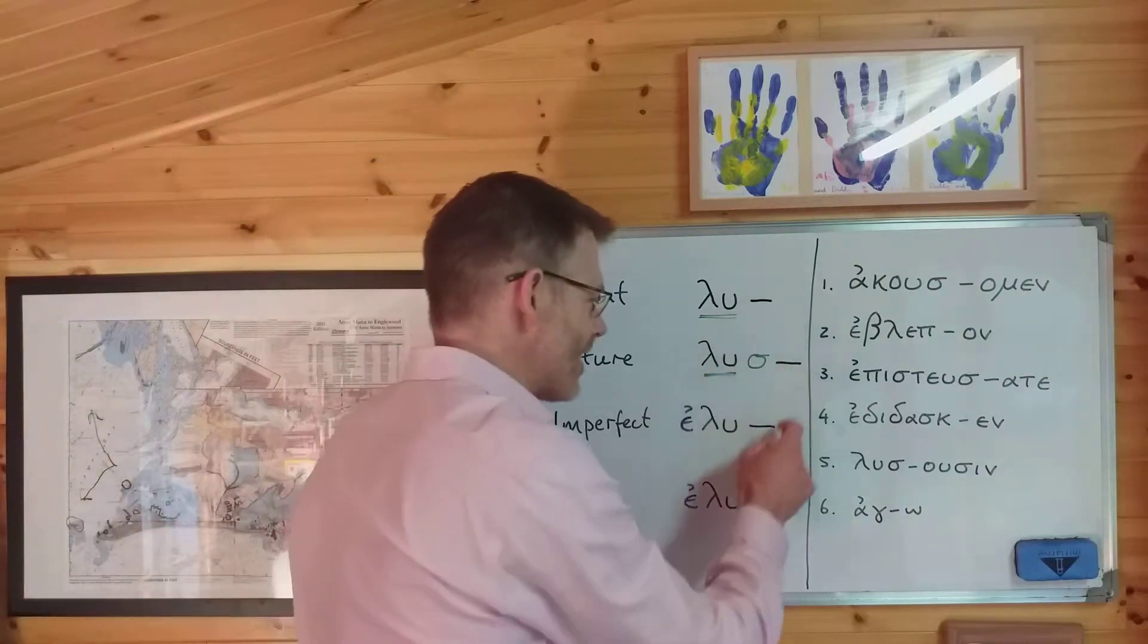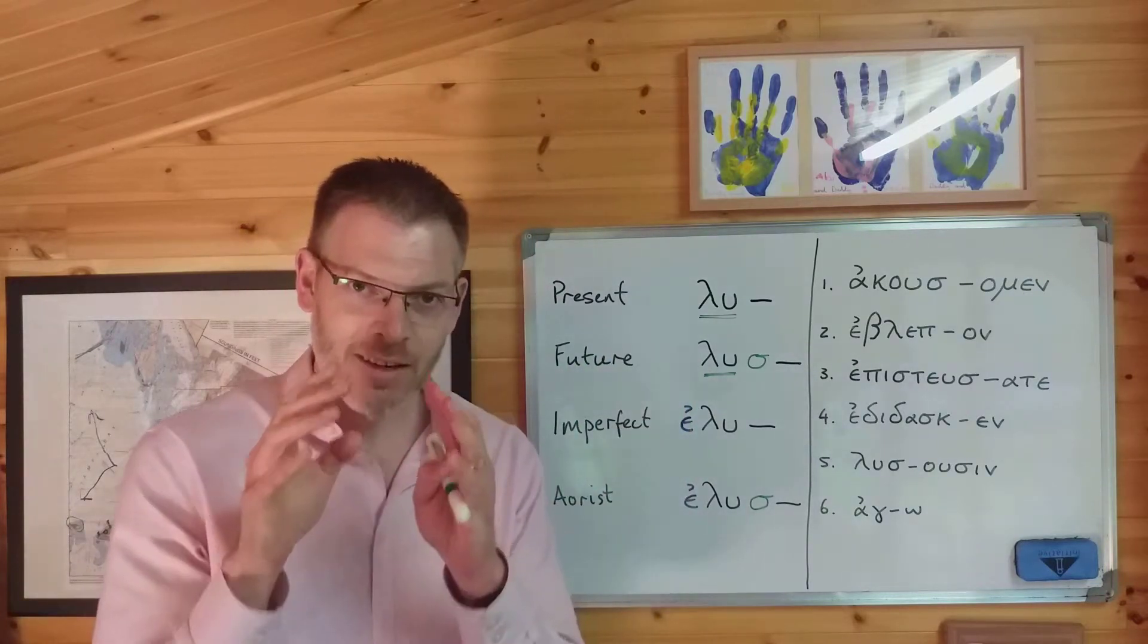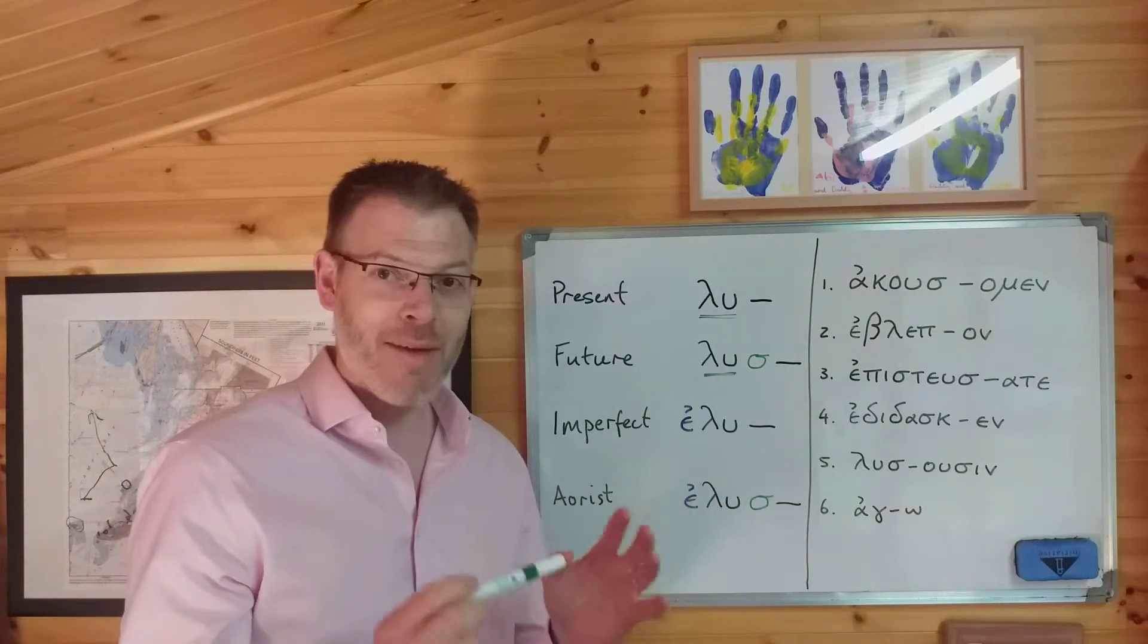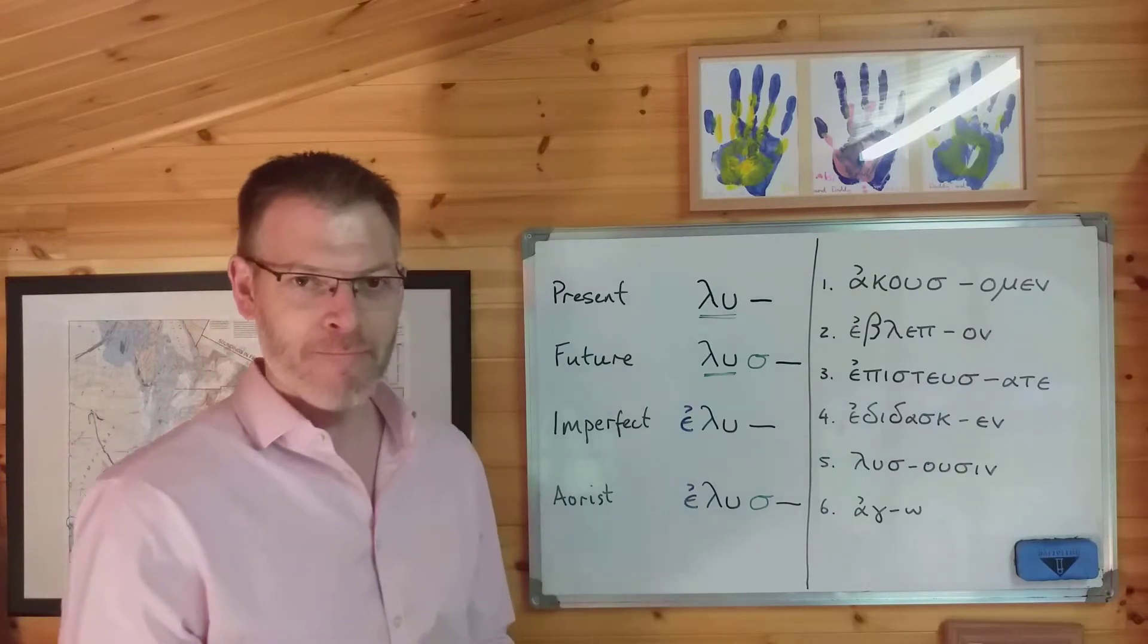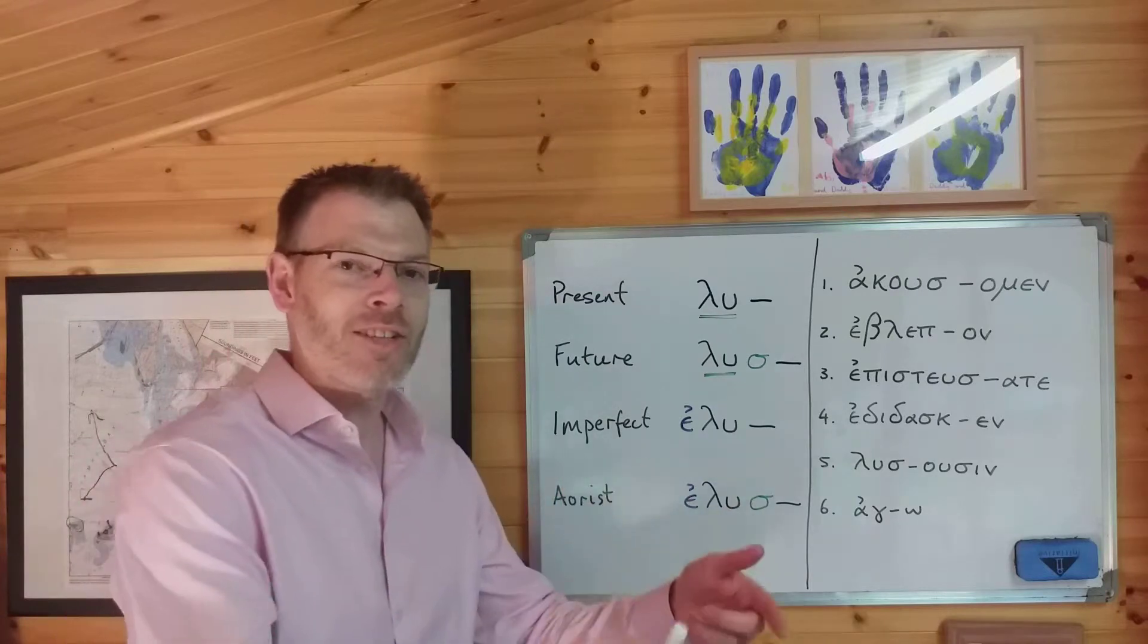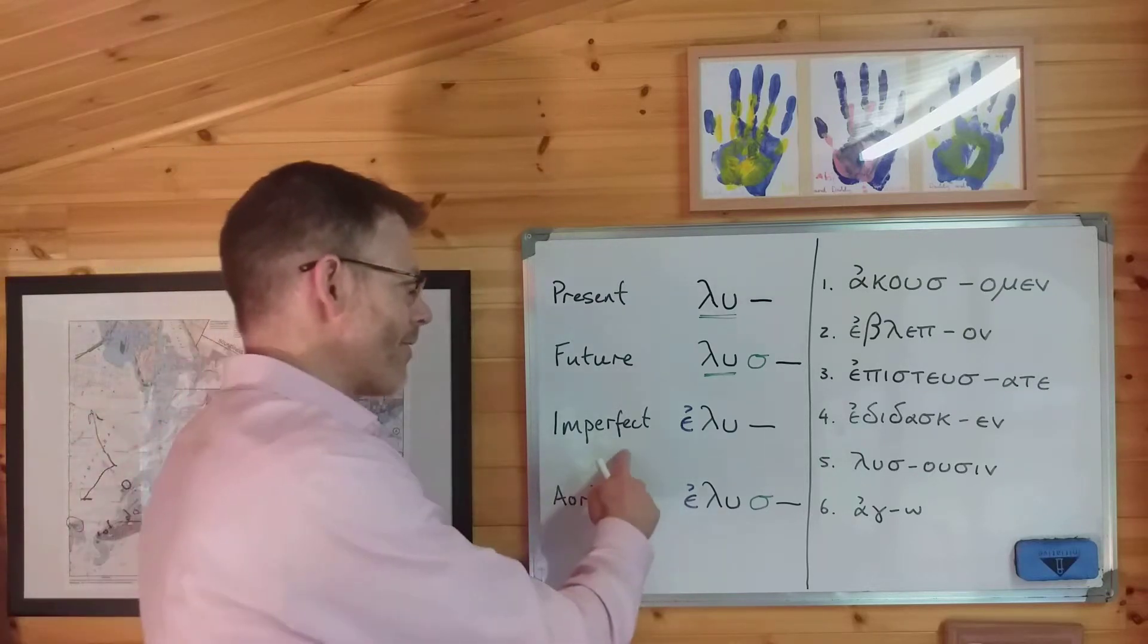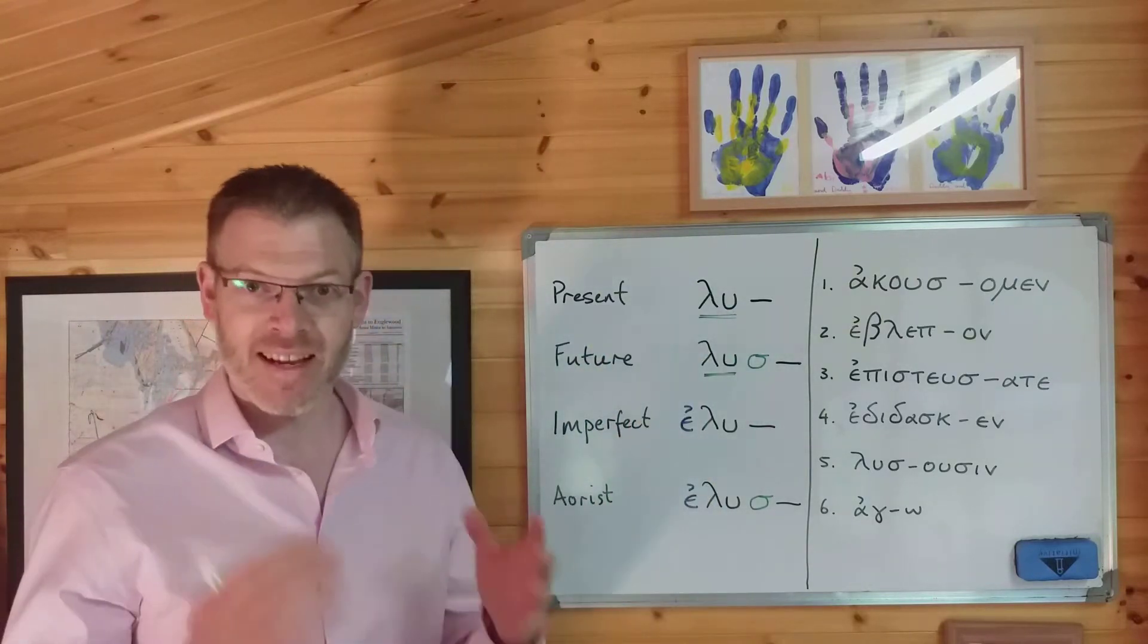And so you can think of these as little labels, little identifying markers. But imperfect and future just have epsilon augment for the imperfect, sigma suffix for the future. The aorist has both. Now what that means is, even if you don't know what the endings are for the present, future, imperfect and aorist, as long as you know what the stem is, then you can spot whether there's a sigma, or an epsilon, or a sigma and an epsilon. So here's the thing you need to remember. When you get to a verb, you need to look for the stem, then you need to see, does it have an epsilon augment, does it have a sigma suffix. That will tell you the tense, and then and only then you look for the ending.